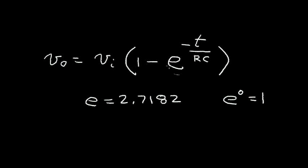As the time becomes very, very long, this E term becomes zero. It approaches zero, and so the output voltage in that case approaches V i. So that seems to work. So if we look at the T zero and T very long, this equation seems to work.